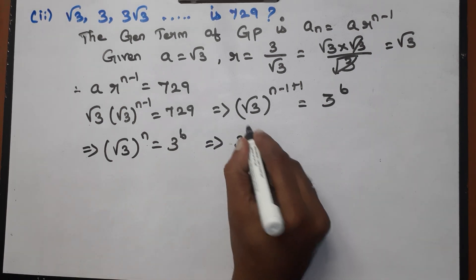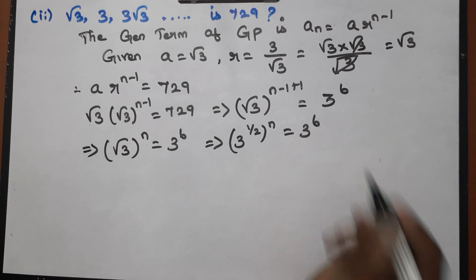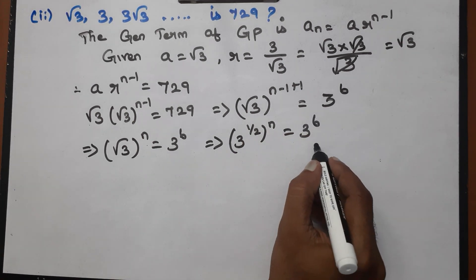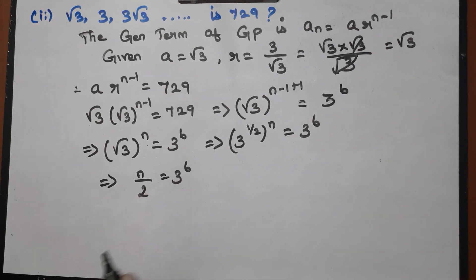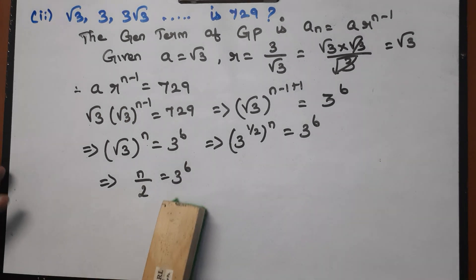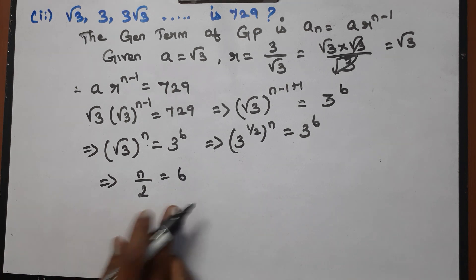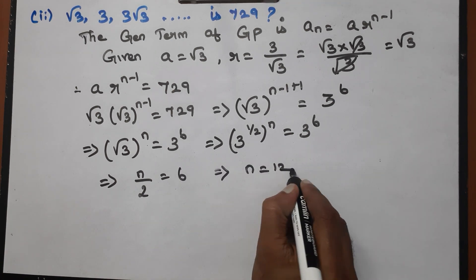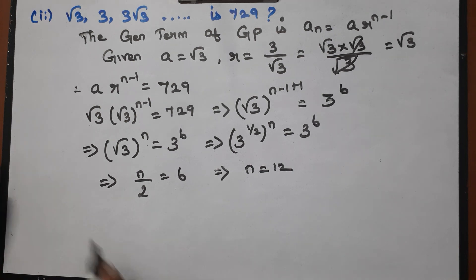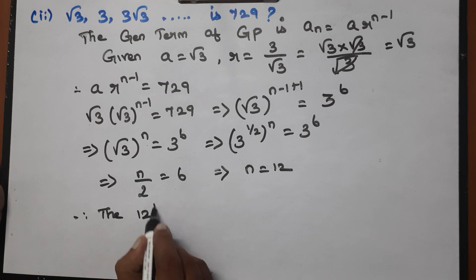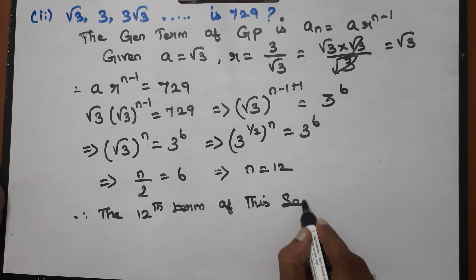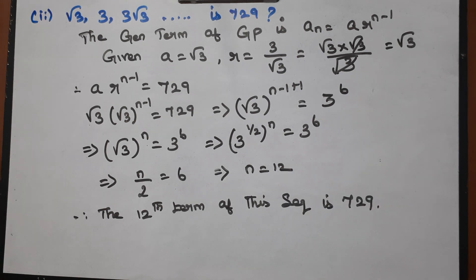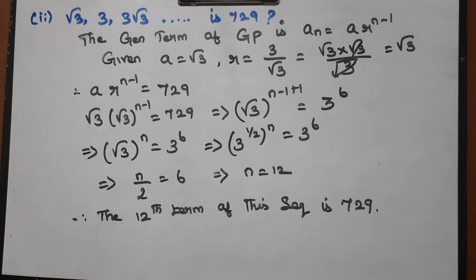Simplifying: (√3)^n = 729, so (3^(1/2))^n = 3^6, giving 3^(n/2) = 3^6. Therefore n/2 = 6, which implies n = 12. Therefore the 12th term of this sequence is 729. It's a very easy simplification.